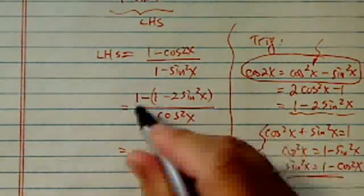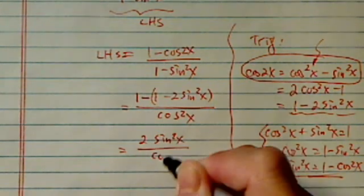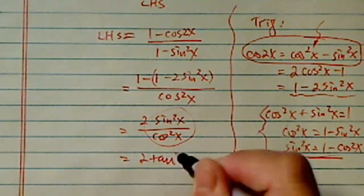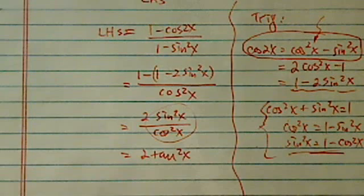The top gets simplified into 2 sine squared x over cosine square of x. By definition this is tangent, which is tangent square x, because I have sine squared and cosine squared.